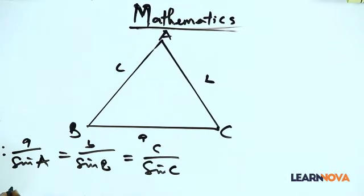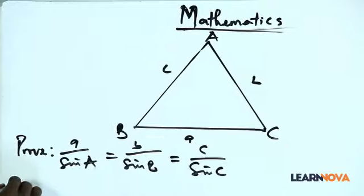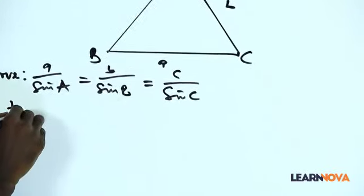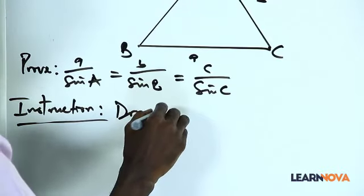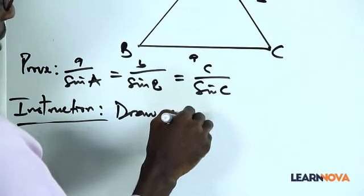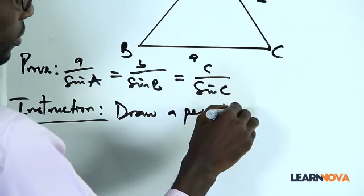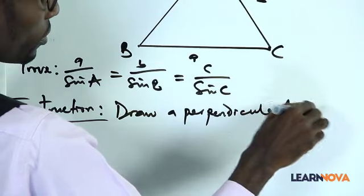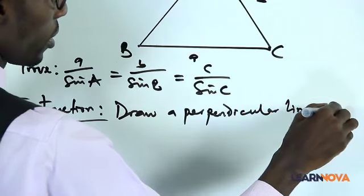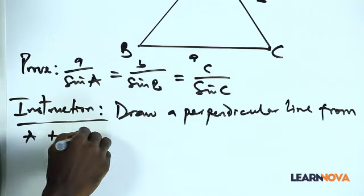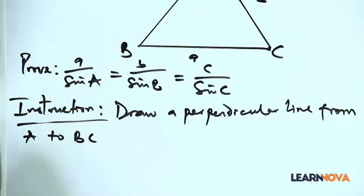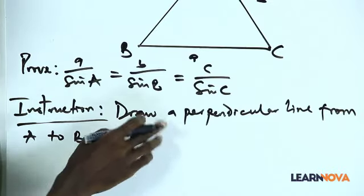To do this, there are instructions you have to follow. The instruction is to draw or construct a perpendicular line from A to BC. So to prove this, you need to first follow this instruction: draw a perpendicular line from A to BC. You have to state what you're doing before you do it — that is how to prove.